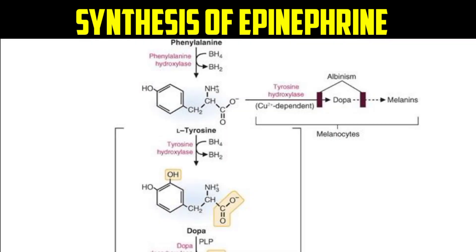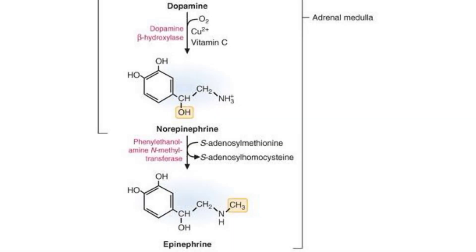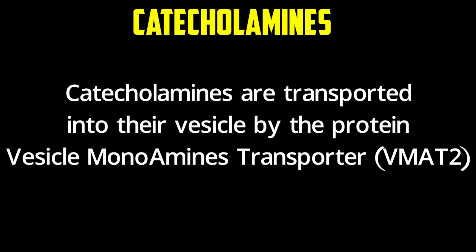To summarize catecholamine synthesis: phenylalanine → tyrosine via phenylalanine hydroxylase; tyrosine → DOPA via tyrosine hydroxylase (also copper-dependent, leading to melanin for skin color); DOPA → dopamine via DOPA decarboxylase (removes CO2); dopamine → norepinephrine via dopamine beta-hydroxylase (adds OH); norepinephrine → epinephrine via phenylethanolamine N-methyltransferase (transfers methyl group).